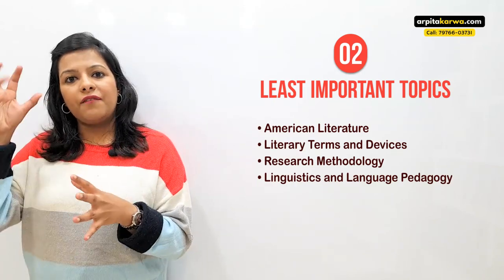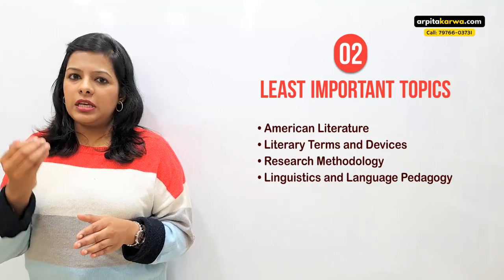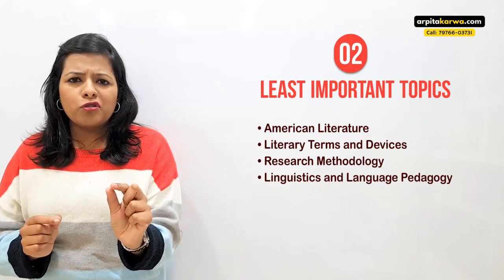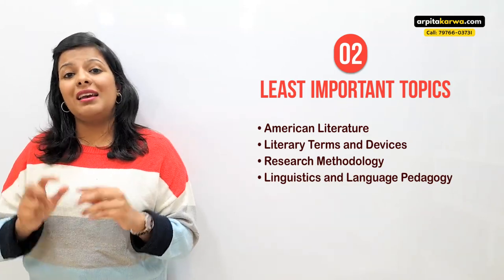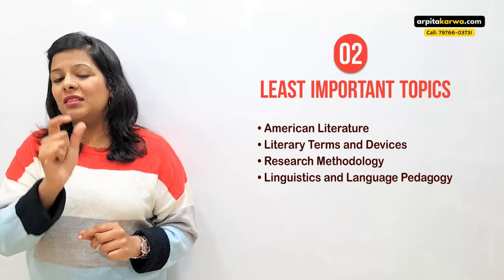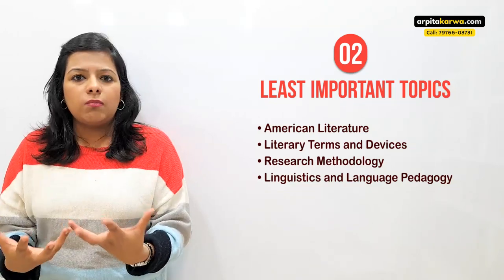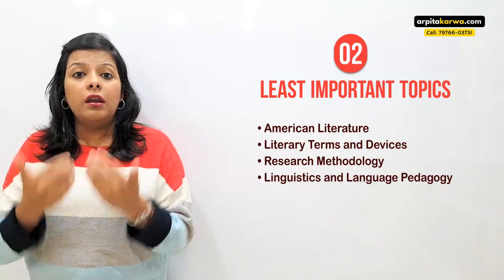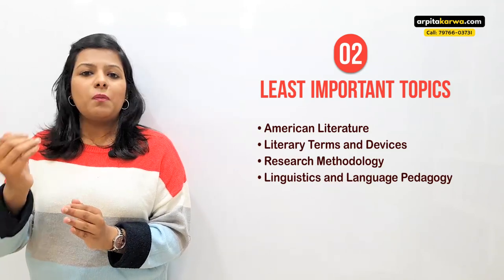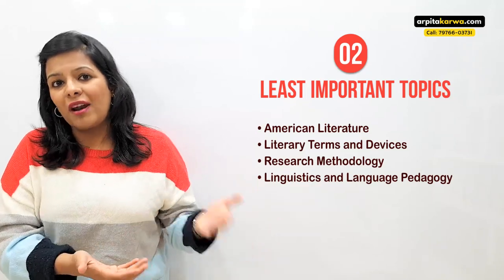Even though literary terms and devices has been removed from the new syllabus, they still ask about three to four questions per year from it. However, it's a very small portion of the exam, and there are more than 150 literary terms and devices to memorise. It's very confusing — juxtaposition, paradox, irony — they all look similar and students get confused even after learning them by heart. You can skip this portion, because investing that time in knowing a few more British writers would be of greater importance.